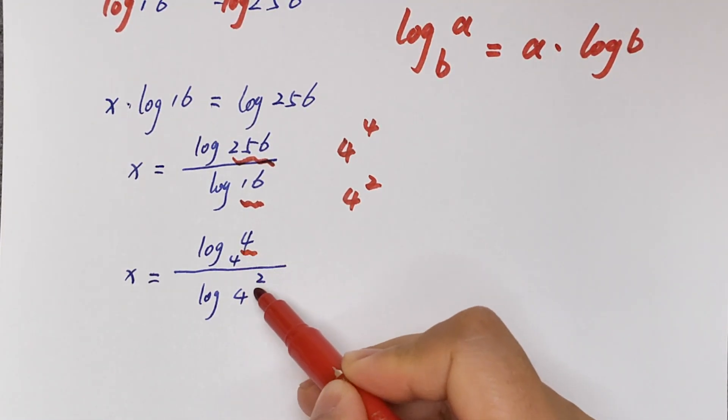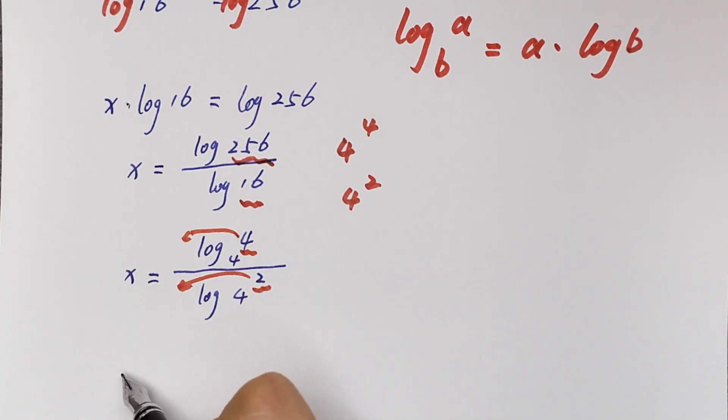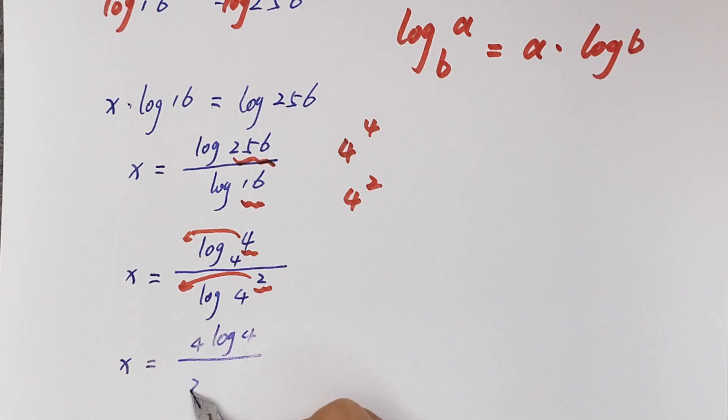Now we change the position. x is equal to 4 log 4 over 2 log 4.